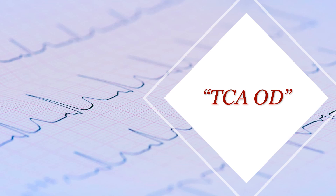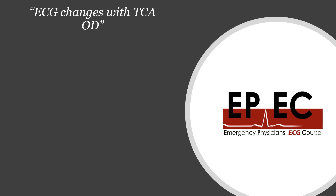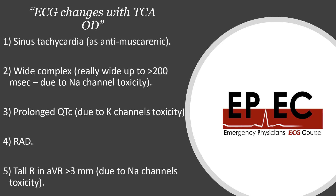Does this match a TCA overdose? Let's cover the ECG changes with TCA overdose. You get sinus tachycardia due to the antimuscarinic effect. You get broad complex — more than one big square in width — due to sodium channel toxicity. You get a long QTc, right axis deviation, and a tall R wave in AVR.